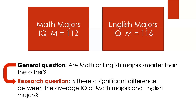Let's say that I gather some data from math and English majors, and I find that math majors have an average IQ of about 112, and English majors have an average IQ of about 116. You can see that there is a difference between them, but that doesn't immediately mean they are statistically different from each other. Let me break down what that means as we continue.